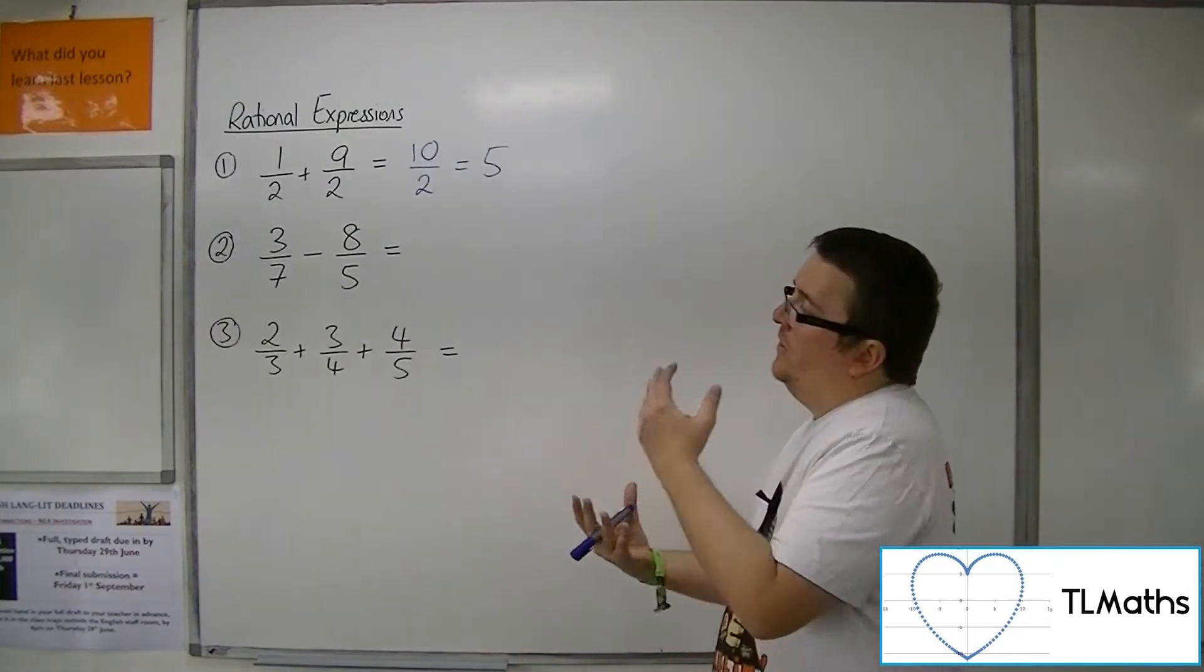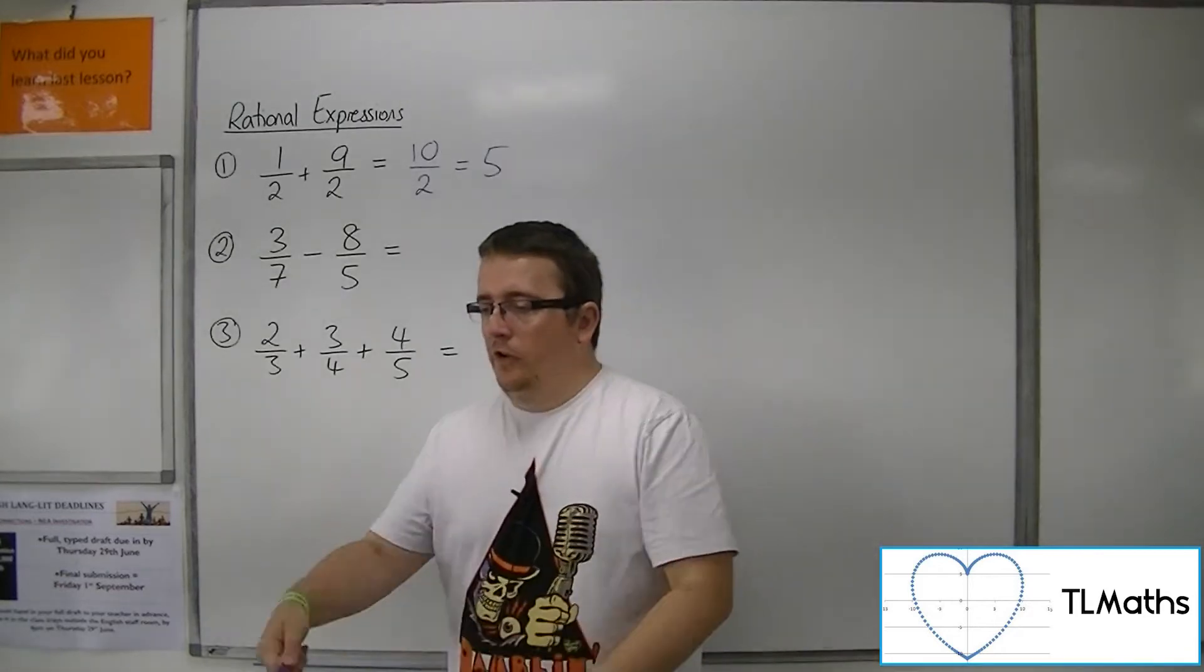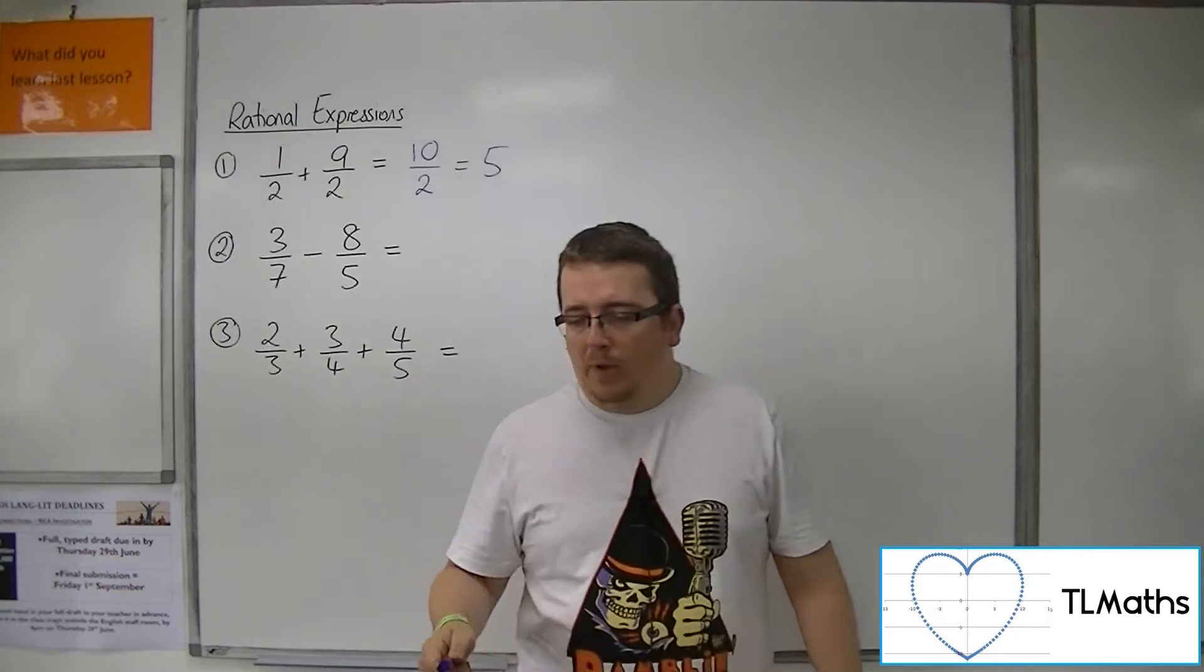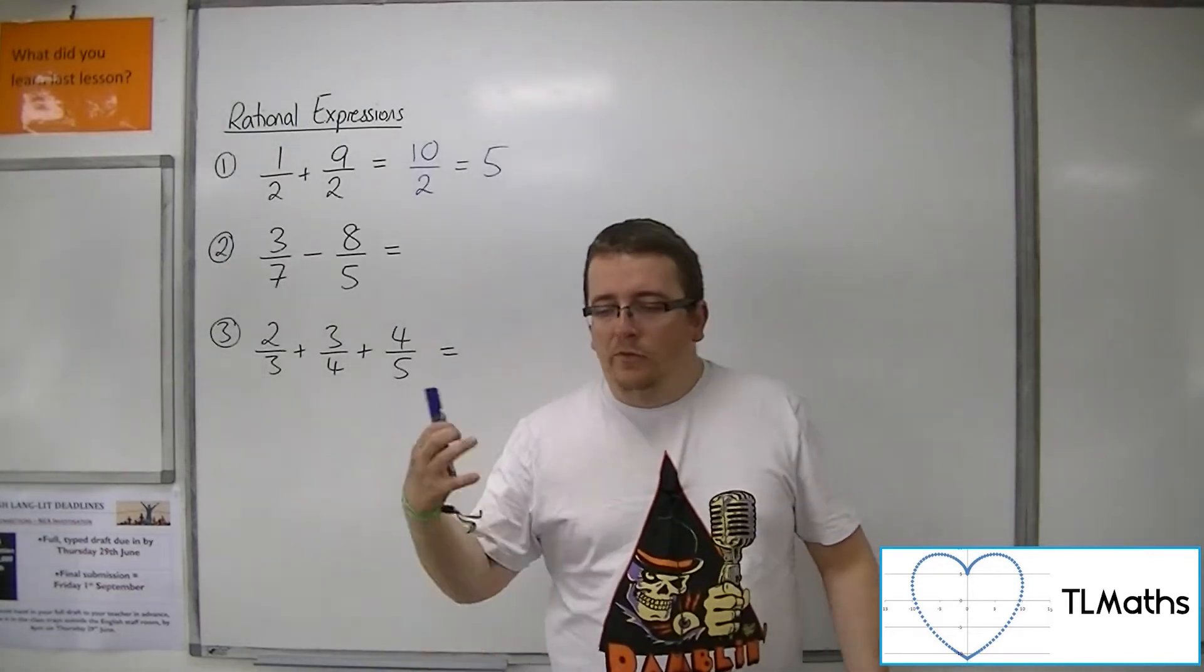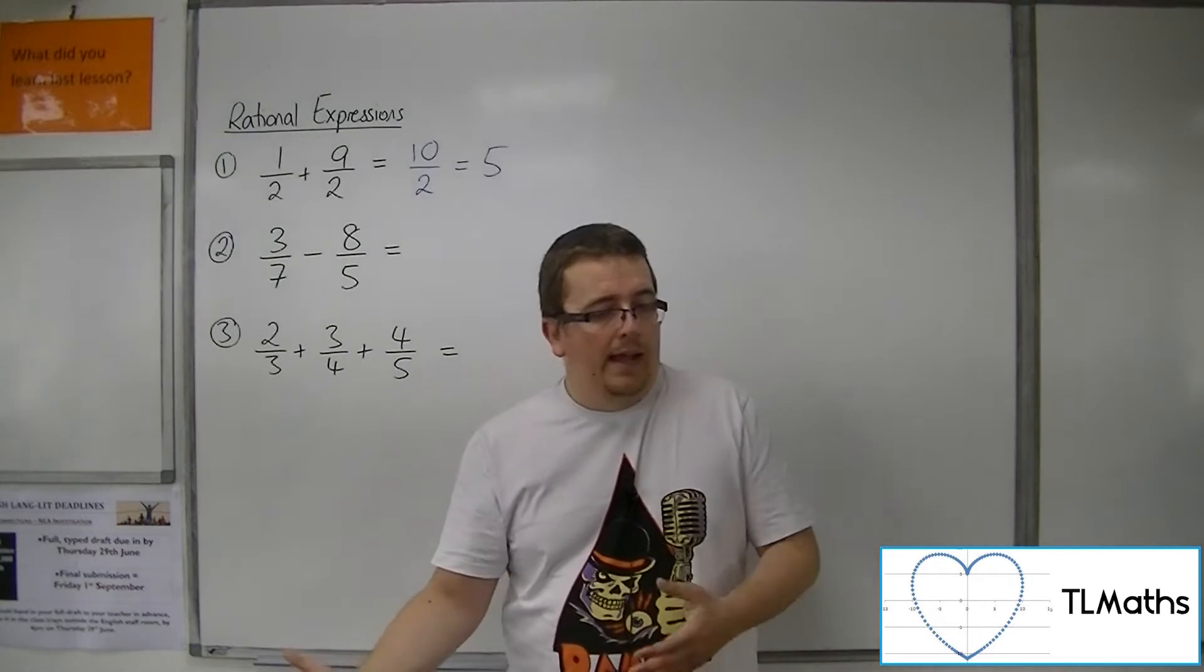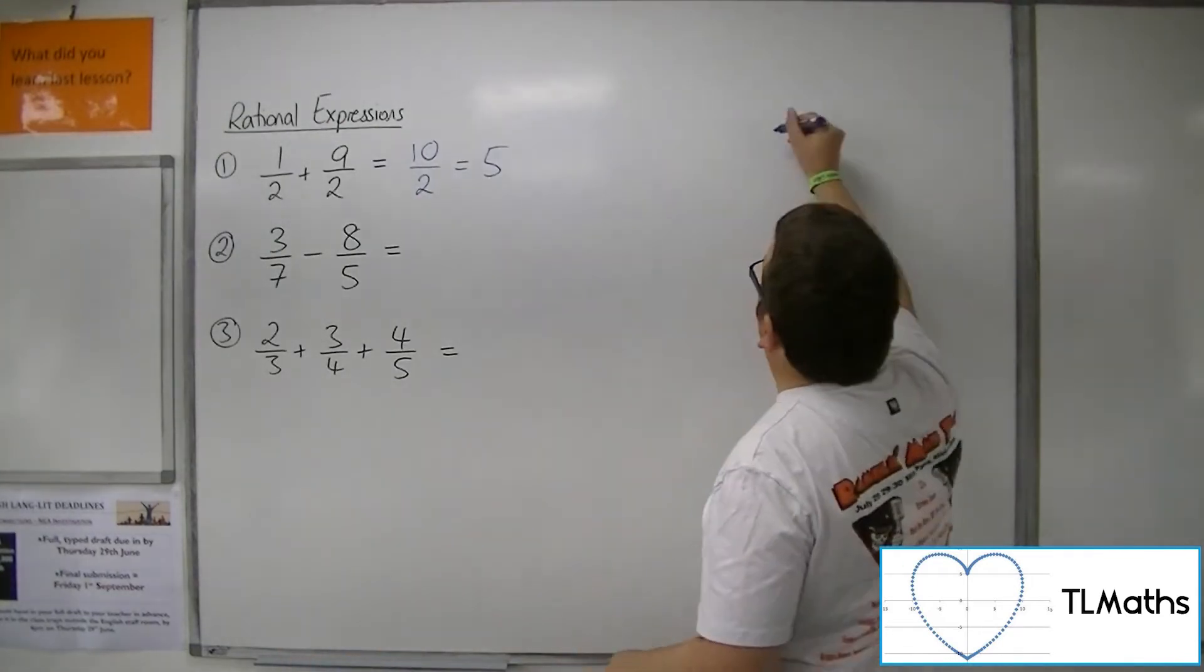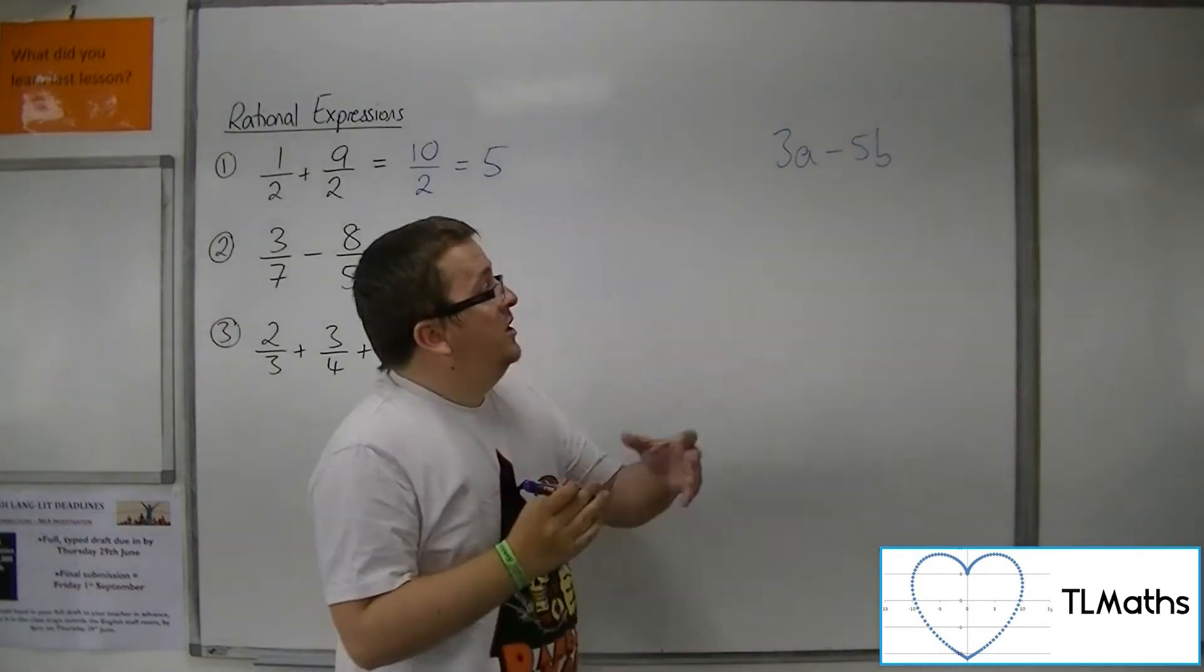But if you look at number 2, we've got 3 7ths. So we've got 3 7ths over here and we're going to take away 8 5ths. But a 7th is not the same as a 5th. So these two things are different. It's like having 3 As and taking away 5 Bs. If I've got 3 A take away 5 B, there's nothing I can do with that.